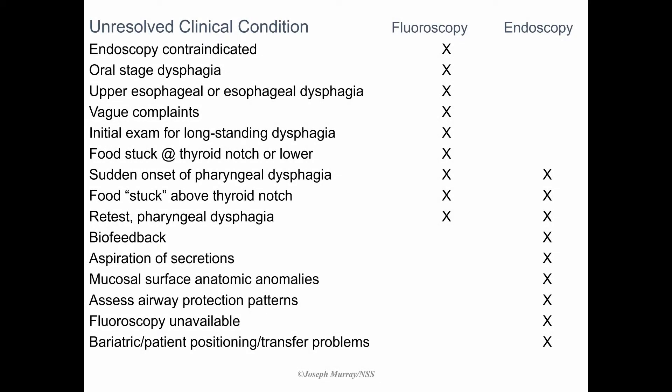We have a table of unresolved clinical conditions on the left and the instrumental exam you may choose based on these conditions. The elements just discussed may influence the clinician to consider that endoscopy is not the appropriate instrument to use, and fluoroscopy may be the first instrumental choice. If there's oral stage dysphagia, this will not be viewed well via the laryngoscope, which is placed behind or above the base of tongue without a view of bolus manipulation or containment orally. If upper esophageal or esophageal problems are suspected, endoscopy will not be able to view bolus transit through those areas.